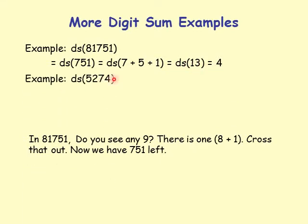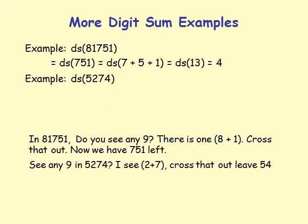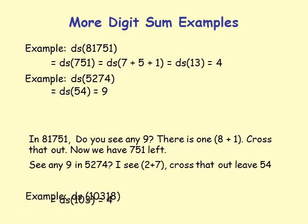Another example: 52744. Do you see any 9s? Yes — 2 plus 7 is 9, so cross that out. I'm left with 544. Digit sum of 544 is 5 plus 4 equals 9.